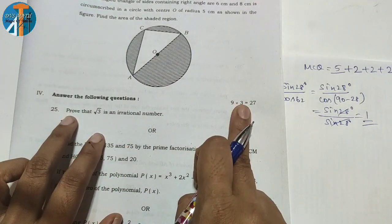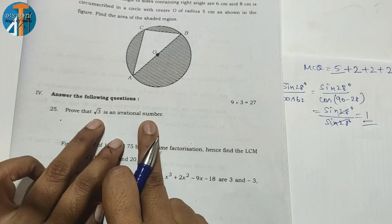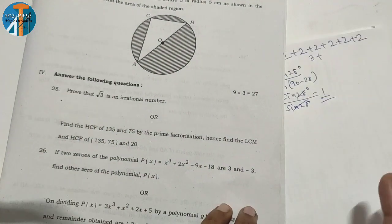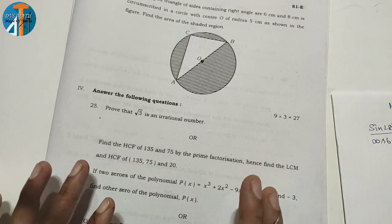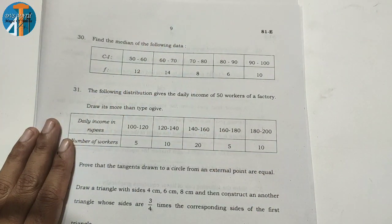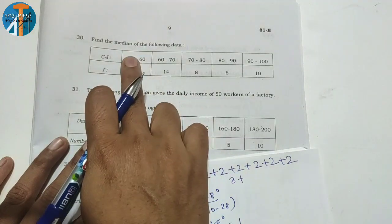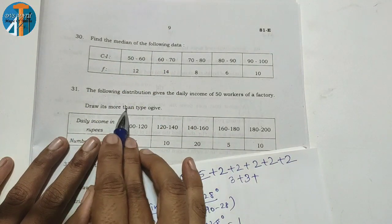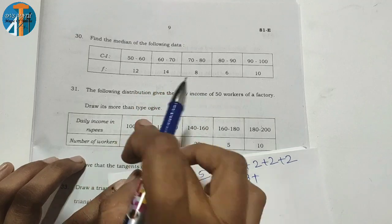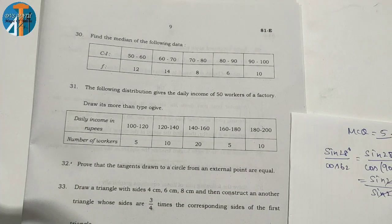Three marks section: Prove that √3 is irrational number - this is in the expected questions. Prove √3 is irrational, easy to solve for 3 marks. Next, find the median of the data. In these sessions I discuss median, mode, and mean. Median mode question gives 3 marks, easy to solve. Prove the tangents drawn - this is the circle theorem, easy to understand from circle theorem section.